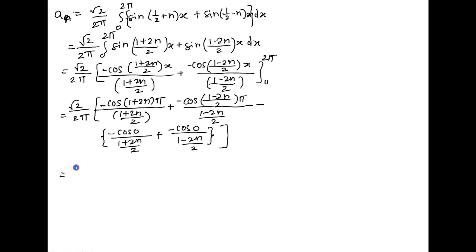Now simplifying: root 2 upon 2π. The denominator 2 terms move to the numerator, giving 2/(1+2n) + 2/(1−2n) + 2/(1+2n) + 2/(1−2n). Note that n is an integer and can be 1, 2, 3, 4, 5, ... Since 2n is always even, (1+2n) and (1−2n) are always odd, so cos(odd·π) = −1.